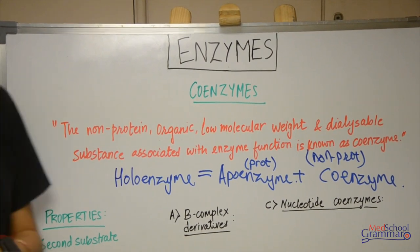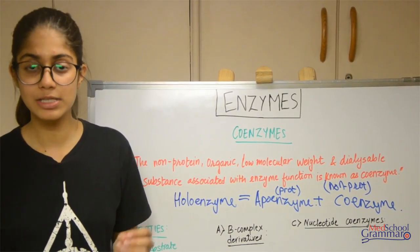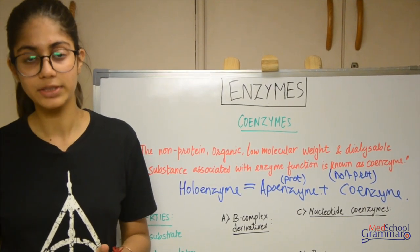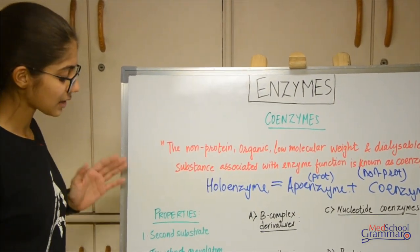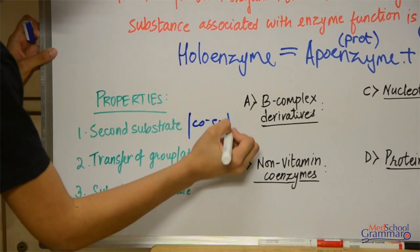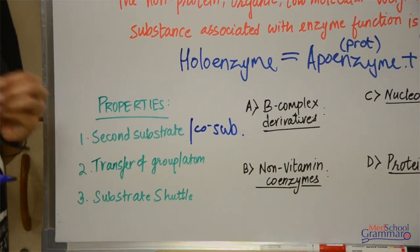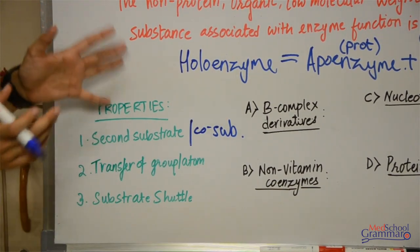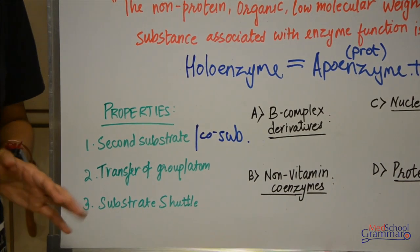Coenzyme can be of two types: cofactor or prosthetic group. When it is loosely bound by non-covalent bonds, it is called a cofactor. When it is tightly bound by covalent bonds and non-separable, it is called a prosthetic group. Coenzymes are also called second substrate or co-substrate because they have an affinity for the enzyme comparable to that of the substrate. Your coenzyme also undergoes catalytic changes during the reaction, but the coenzyme is regenerated and forms the original coenzyme again by the end of the reaction. On the other hand, your substrate undergoes catalytic change and forms the product — that is the difference between the two.